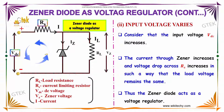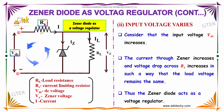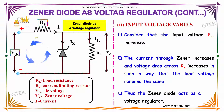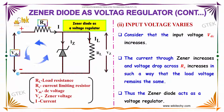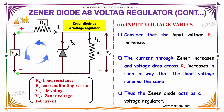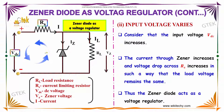If the input voltage varies, the current through the Zener increases and the voltage drop across RS increases in such a way that the load voltage remains the same. Thus, the Zener Diode acts as a voltage regulator.